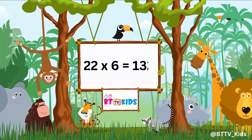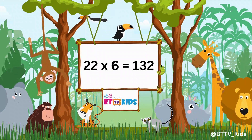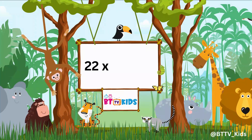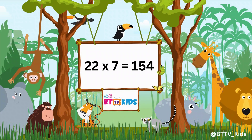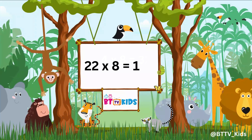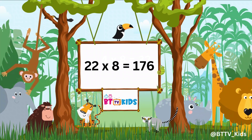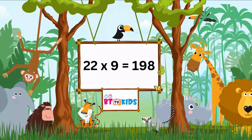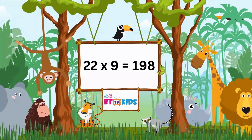Twenty-two sixes are one hundred thirty-two. Twenty-two sevens are one hundred fifty-four. Twenty-two eights are one hundred seventy-six. Twenty-two nines are one hundred ninety-eight.